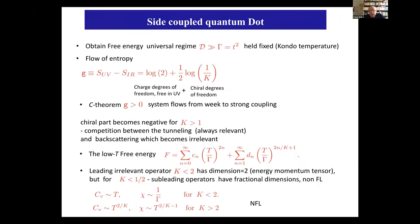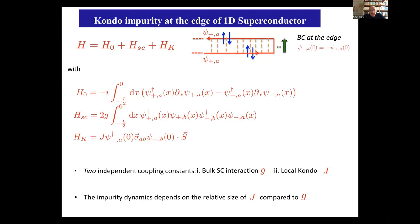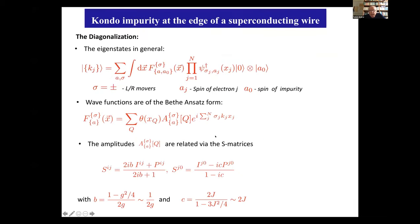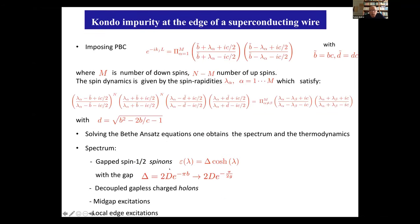Let me go to very recent work: the Kondo impurity at the edge of a superconductor. Again, here is the Hamiltonian with kinetic term, superconducting term, and Kondo coupling. You construct an eigenstate by matching together regions: the interaction among electrons generates superconductivity; the coupling to the dot generates hopping. Very beautiful Bethe ansatz equations emerge, and results immediately follow: gapped spin-1/2 excitations, mid-gap excitations, and local edge excitations — giving a very rich spectrum.